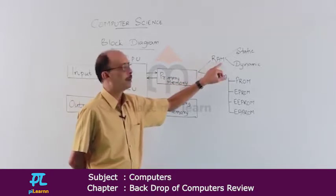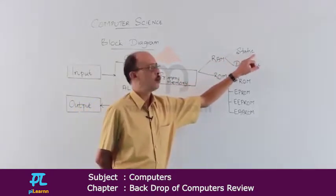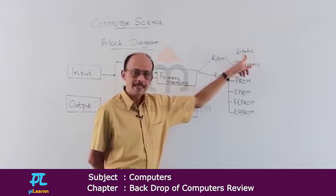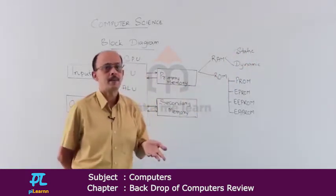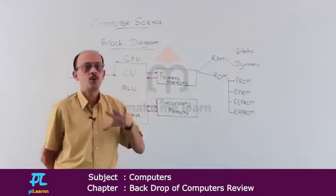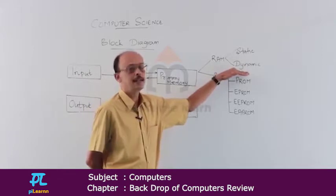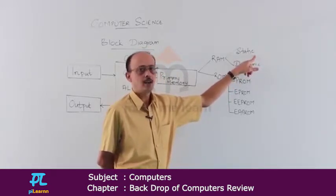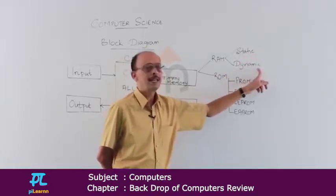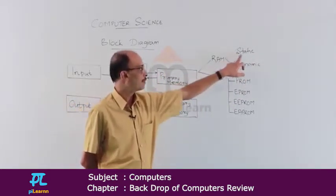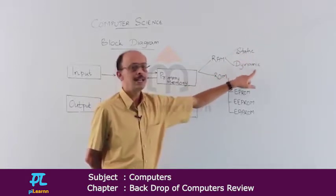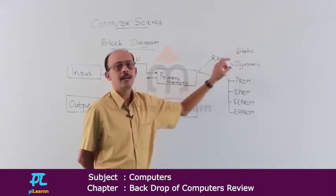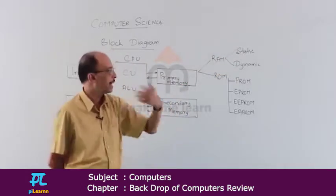There are two types of RAM: static RAM and dynamic RAM. In static RAM, data is stored and does not need to be refreshed every time. In dynamic RAM, we need to refresh it periodically to retain the data contents. Static memory is more expensive but very fast. Dynamic memory is less expensive but slower compared to static memory. The types of static and dynamic RAM will be discussed in the next part.